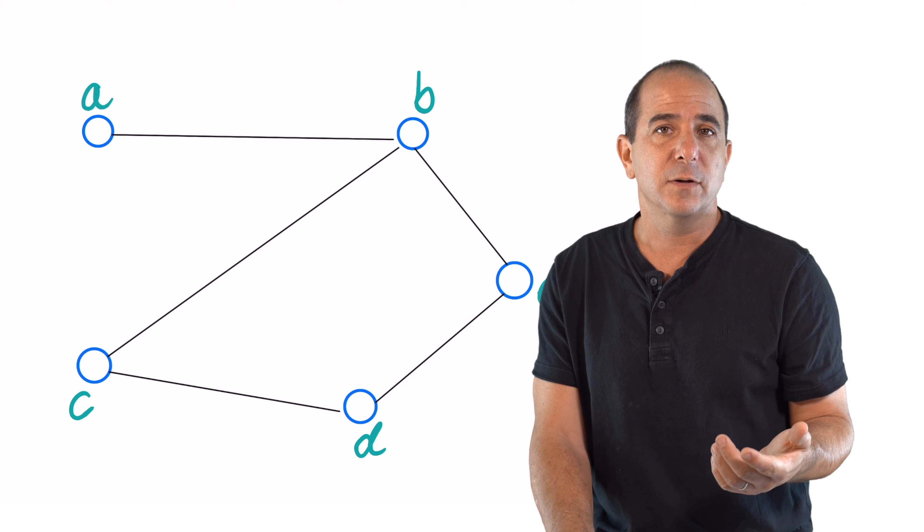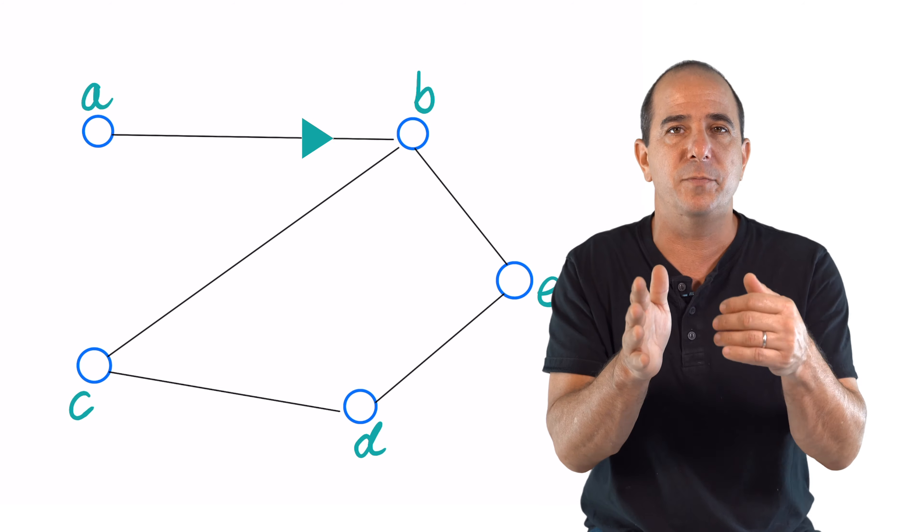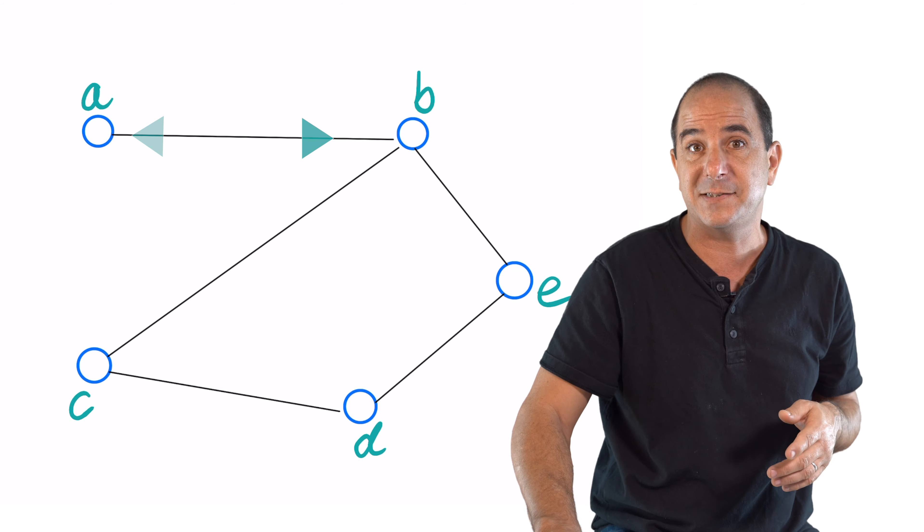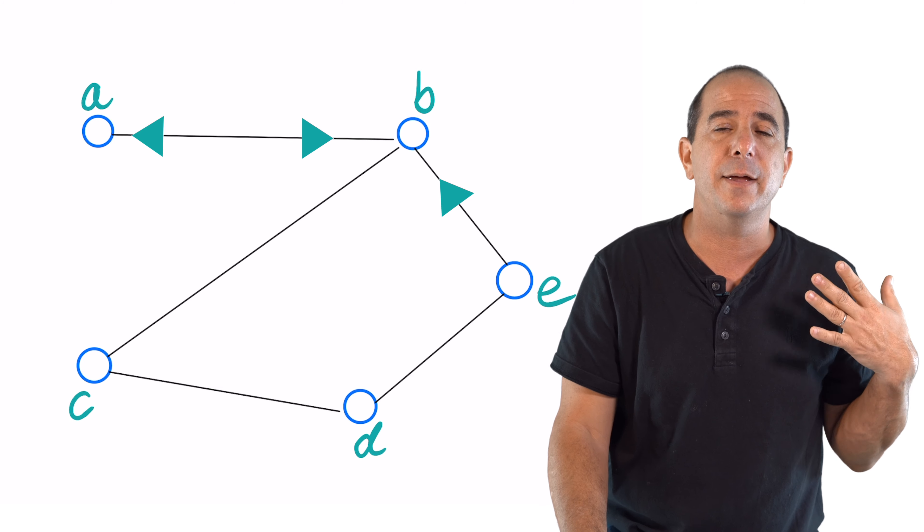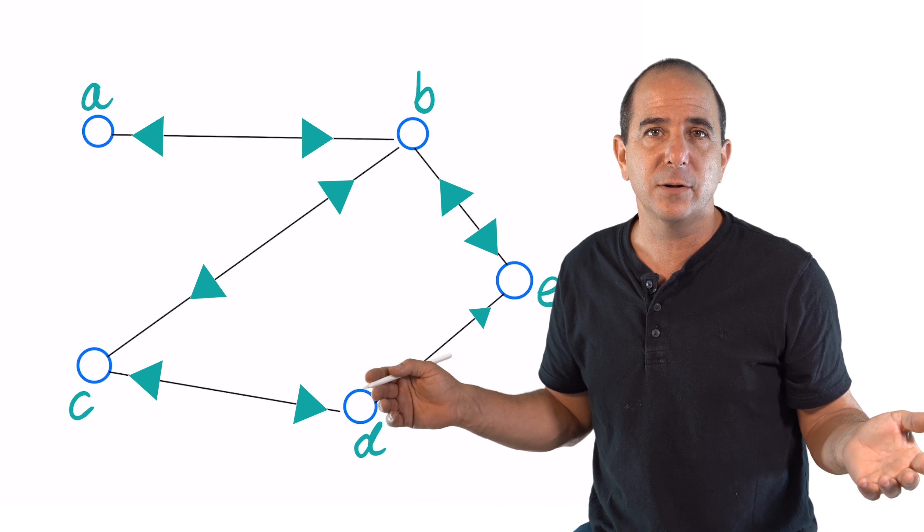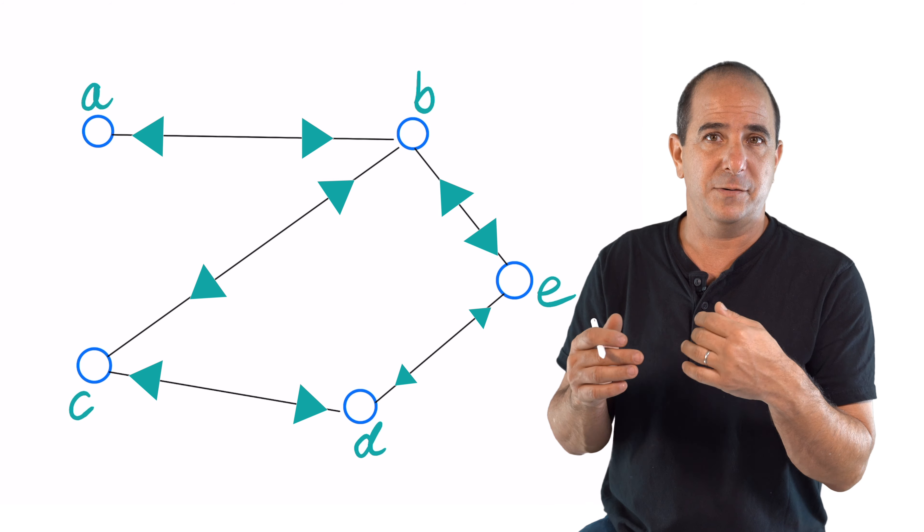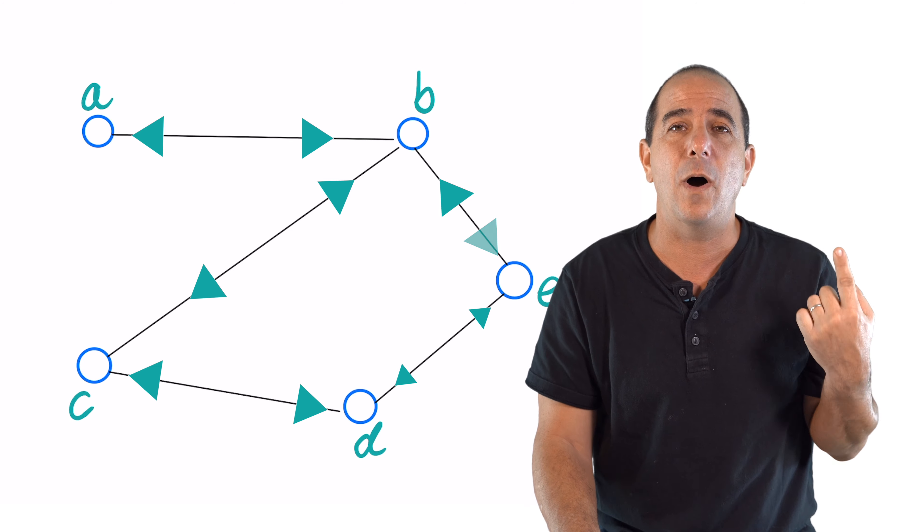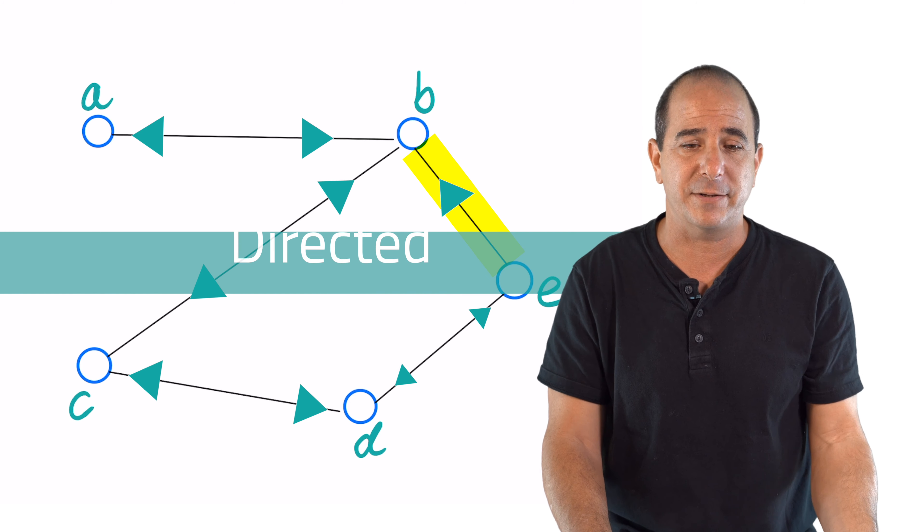Now, some roads are symmetric, meaning going north could be the same as going south. But some roads are one-directional. So if my graph is entirely symmetric, we will call it undirected. If there's at least one directed edge, I will define it as a directed graph.